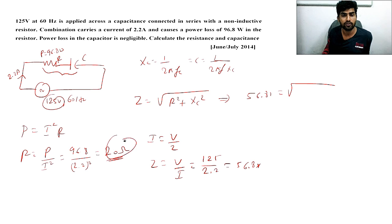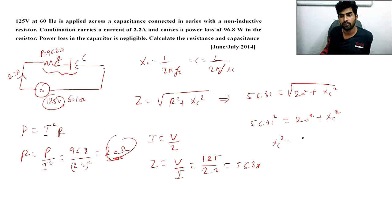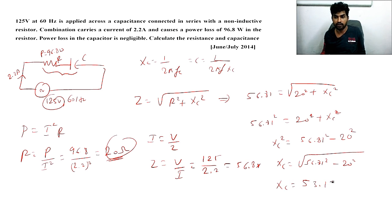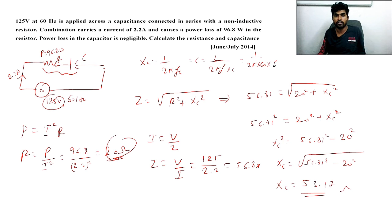Substituting into Z² = R² + Xc²: 56.81² = 20² + Xc², so Xc² = 56.81² − 20², giving Xc = √(56.81² − 20²) = 53.81 ohms. Therefore C = 1 / (2πf·Xc) = 0.049 microfarads.